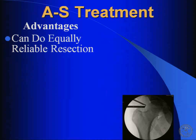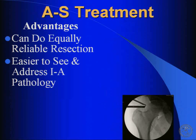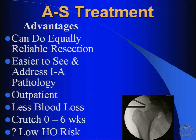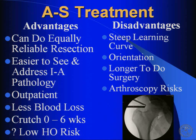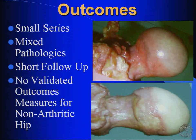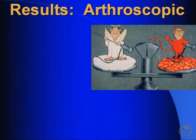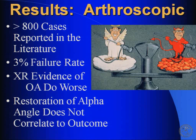Comparing this to arthroscopy, you can achieve an equal resection, it's easier to address intra-articular pathology, and you can do this as an outpatient procedure with minimal blood loss and minimal crutch use. The disadvantages are a steep learning curve, orientation issues particularly in the peripheral compartment, it may take longer, and there are the standard risks of arthroscopy. Looking at outcomes in the literature, there are over 800 cases of arthroscopically treated FAI with a 3% failure rate, with evidence that those who have arthritis do worse and that restoration of alpha angle does not correlate to outcome.